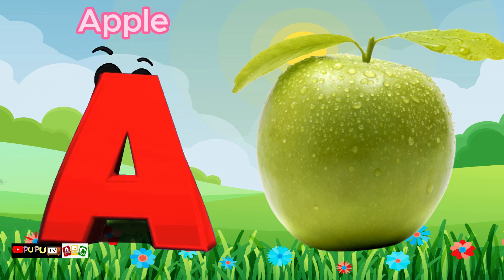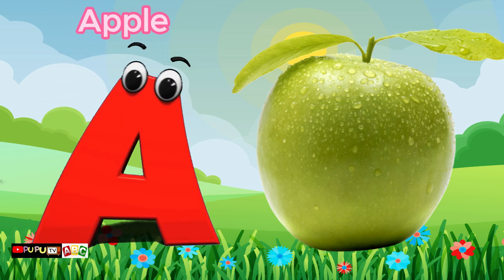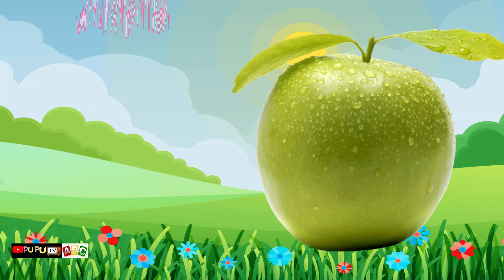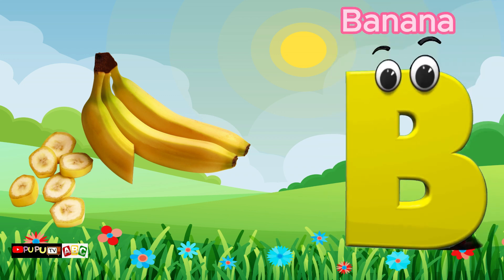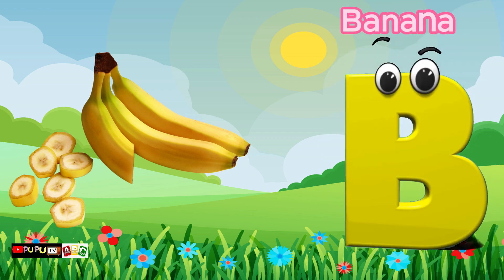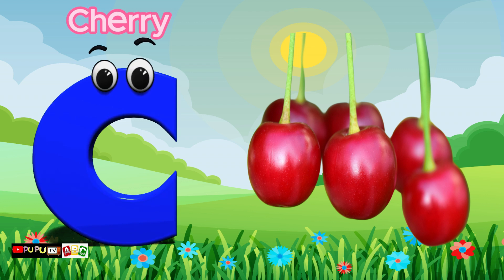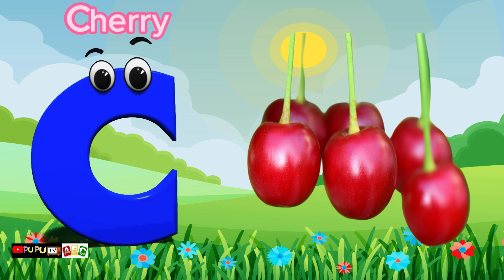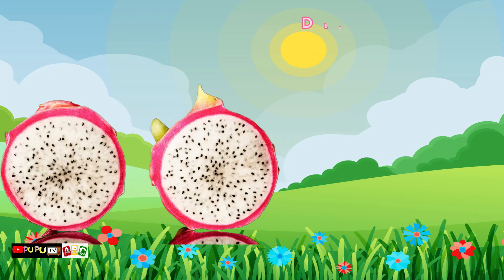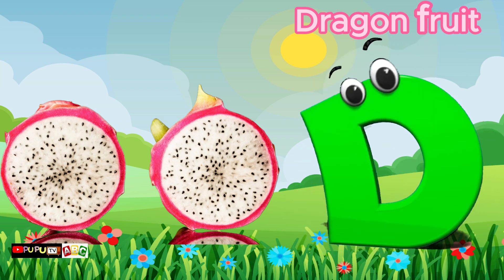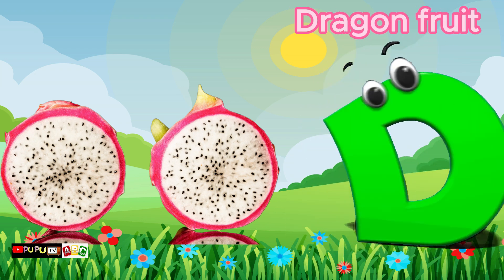A is for Apple. A-A-Apple. B is for Banana. B-B-Banana. C is for Cherry. C-C-Cherry. D is for Dragon Fruit. D-D-Dragon Fruit.